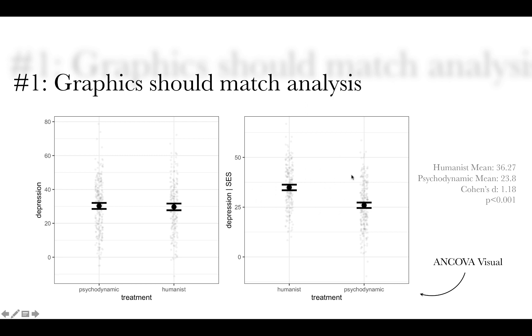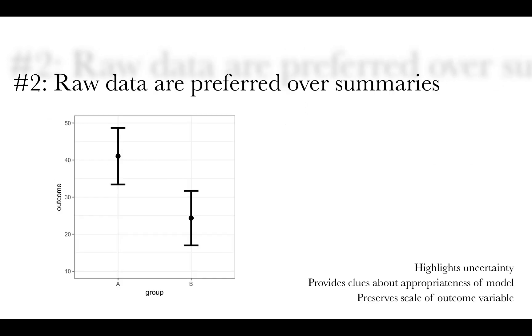What would be more appropriate is doing something like this, which is an added variable plot with some modifications. This is a visual representation of exactly what's happening in the background. What I did was I built a model that predicted depression from socioeconomic status, residualized it, and then added the mean back into the score. And now I'm looking at the mean difference between humanist and psychodynamic. Now it's not perfect, but this is the best representation of what an ANCOVA is doing in the background. And now you look at this and you can see that P is less than 0.05. You can see that Cohen's D is 1.18. It's not perfect, but at least it's not way off.